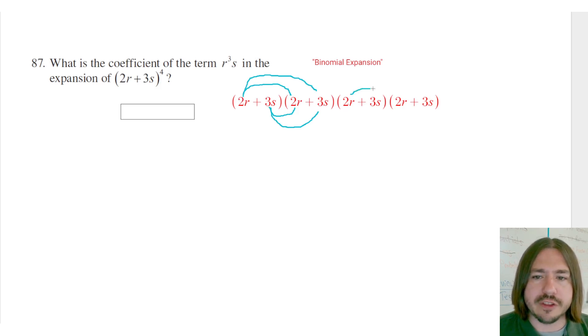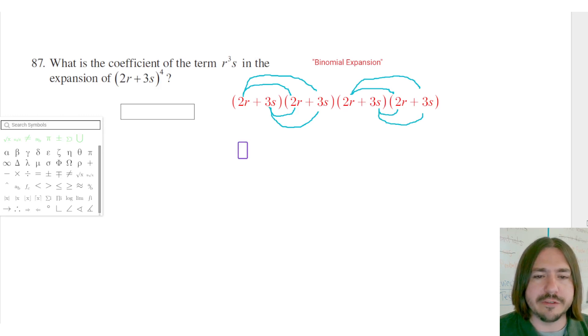Since the binomials are the same, I'm just going to end up with the same thing. So I'm going to go ahead and multiply this out and simplify. So I've got 2r times 2r is going to be 4r squared.